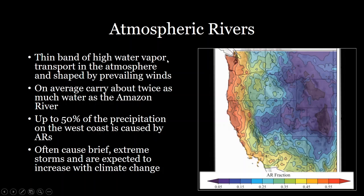One important thing is that atmospheric rivers tend to be very flashy — they can dump a huge amount of rainfall in a short amount of time, and therefore can cause a lot of flooding. Knowing how they form and being able to predict them is very important for knowing when flooding will occur.